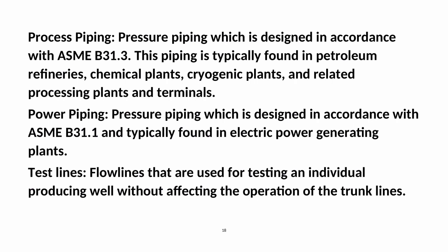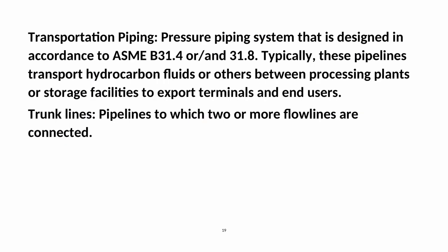Process Piping: Pressure piping designed in accordance with ASME B31.3, typically found in petroleum refineries, chemical plants, cryogenic plants, and related processing plants and terminals. Power Piping: Pressure piping designed in accordance with ASME B31.1, typically found in electric power generating plants. Test Lines: Flow lines used for testing an individual producing well without affecting the operation of the trunk lines.